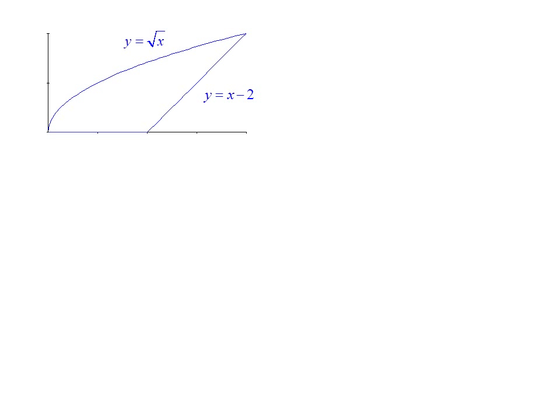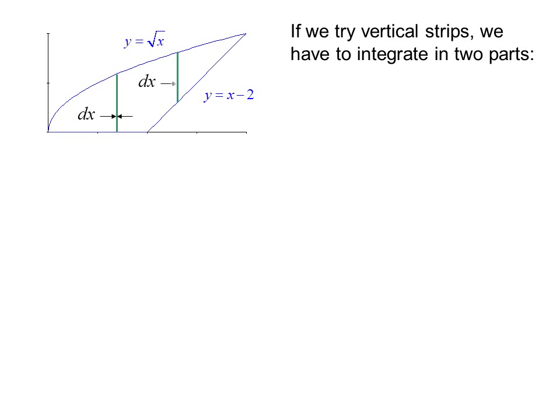Here we have two curves, y equals radical x and y equals x minus 2. If we try vertical strips, we have to integrate in two parts.